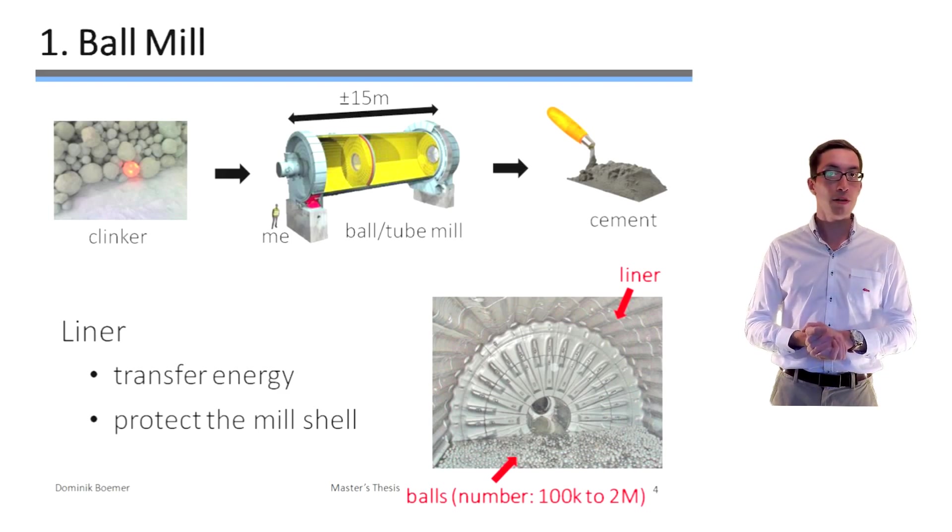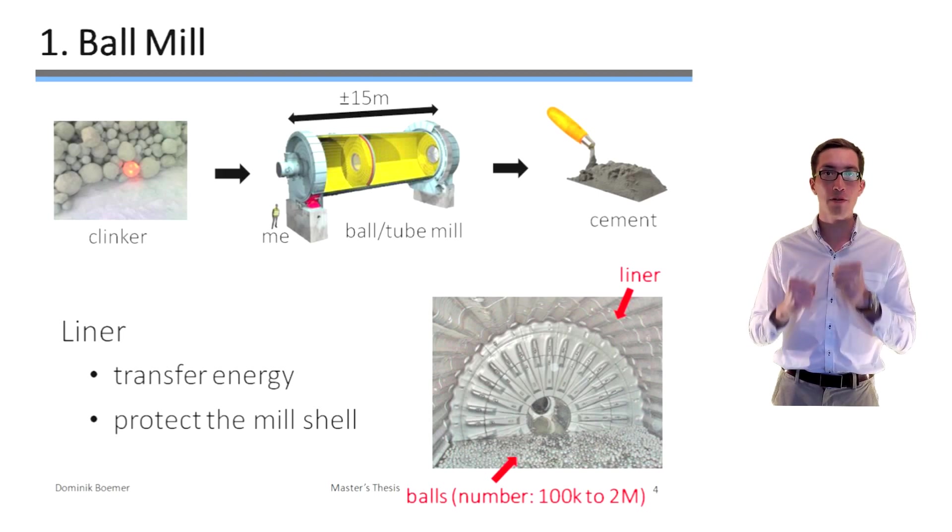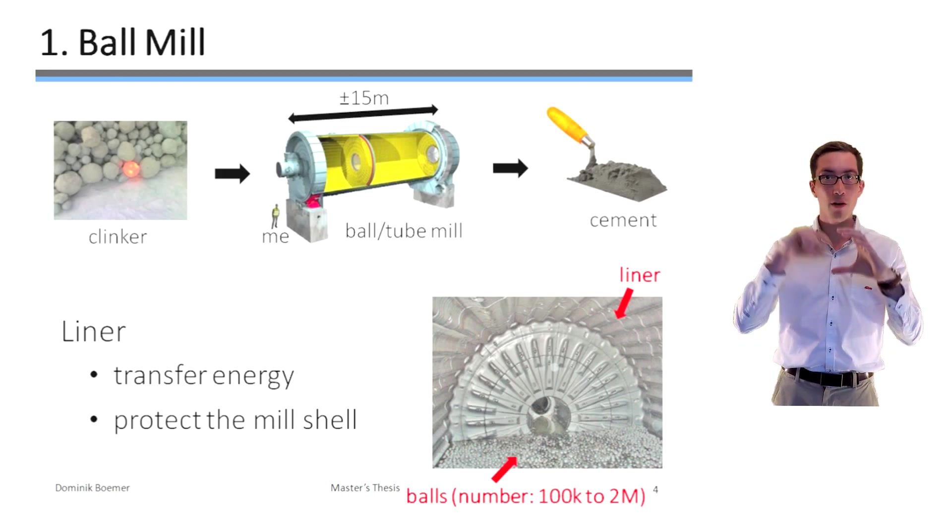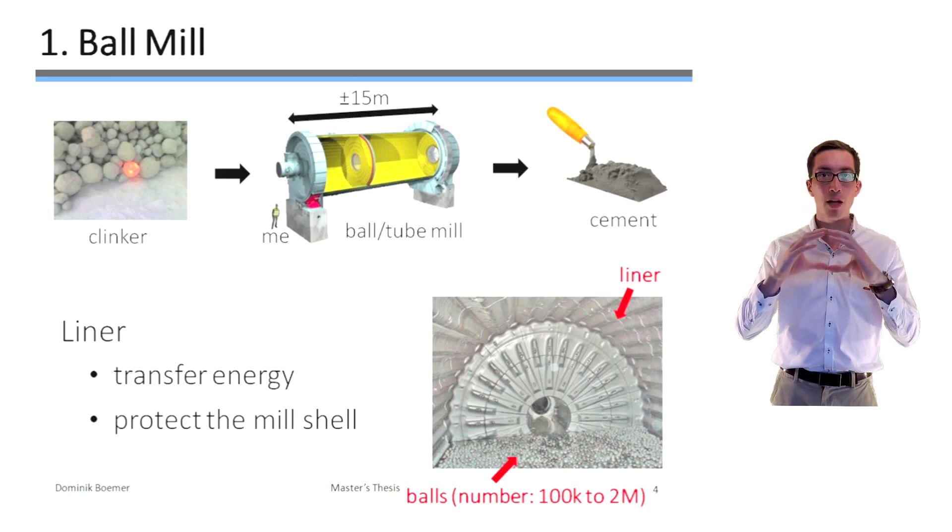Ball milling is however not only highly energy intensive but also very aggressive in terms of wear. For this reason, a profiled and wear resistant liner enhances the energy transfer from the mill to the grinding charge and it protects the mill shell, the outer part of the mill, at the same time.